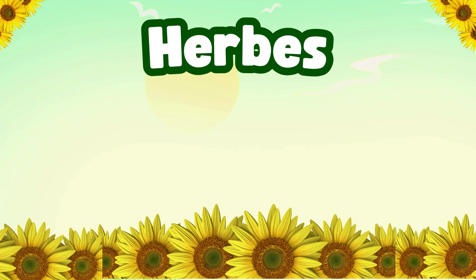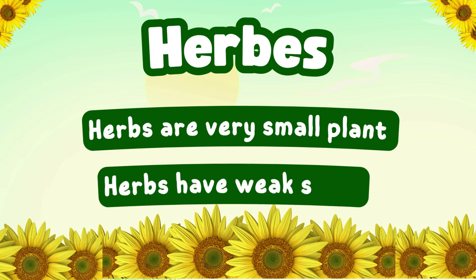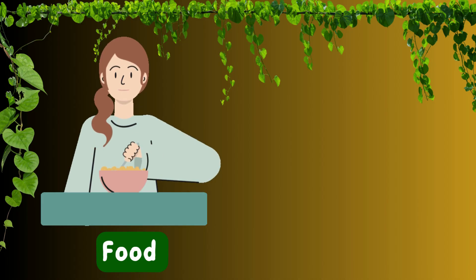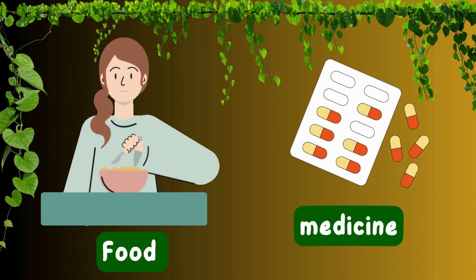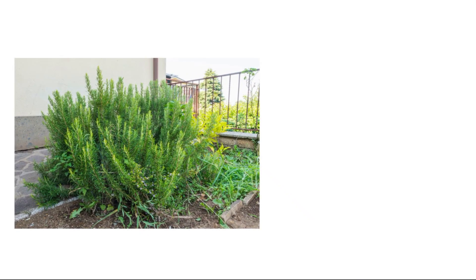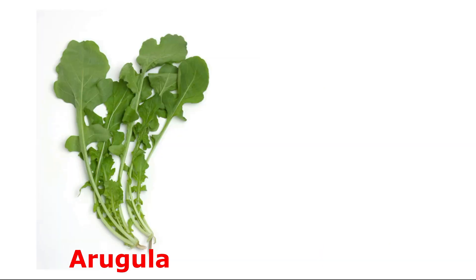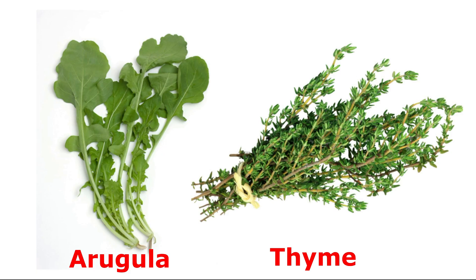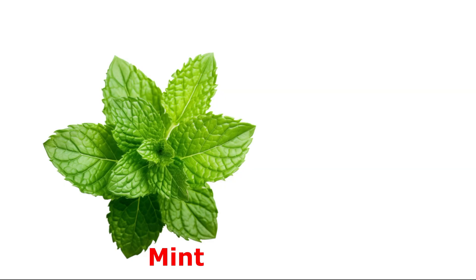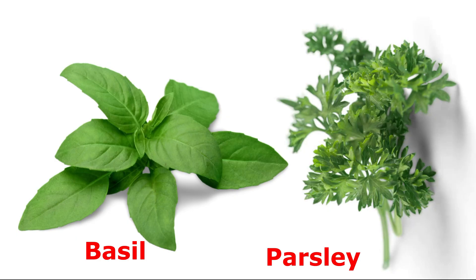Herbs are very small plants with a weak stem. Herbs are used in food, medicine and to make perfume. Examples: dill, basil and parsley.